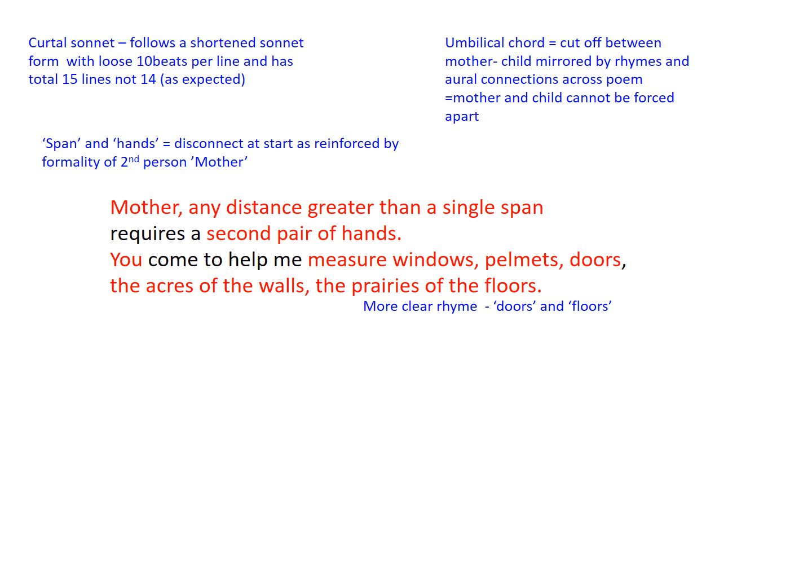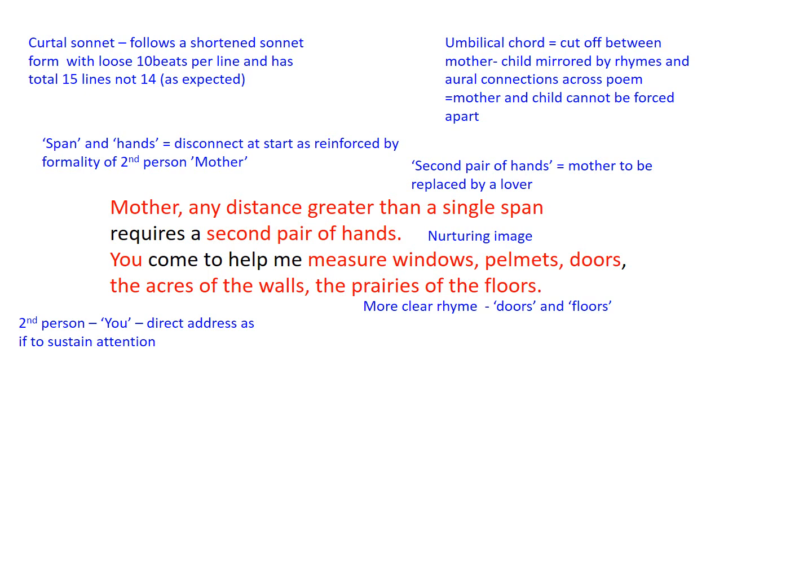The key image of 'second pair of hands' is one we associate with someone being on hand to help — in this case the mother, but maybe one day they'll be replaced by a lover. There's a nurturing, maternal image in what being a second pair of hands means. By line three there's direct address — 'You come to help me' — as if to sustain attention from the parent.